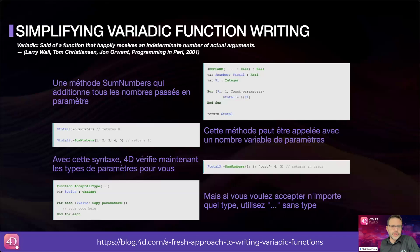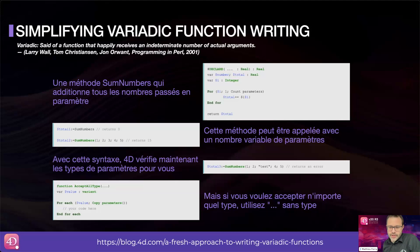We will continue with improvements in the 4D language and talk today about variadic functions. We have simplified the declaration of methods or functions that accept an indeterminate number of parameters. You can now use the three-dot symbol in your last parameter to indicate that the number of parameters can vary. This enhancement makes your function and method declarations simpler and easier to use.